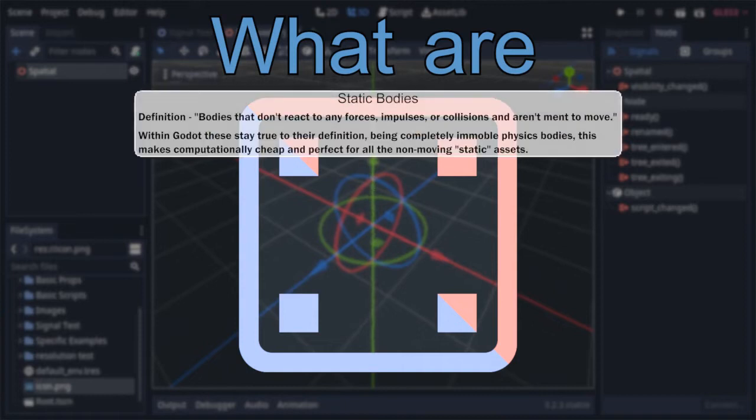Well, put simply, they are physics bodies that other bodies can collide with but don't react to collisions themselves. This makes them incredibly cheap process-wise relative to the other physics bodies and perfect for making all the non-moving but still collidable portions of a given game world.